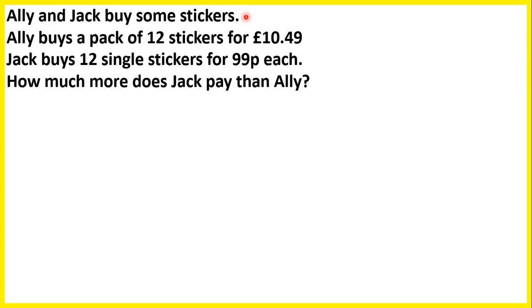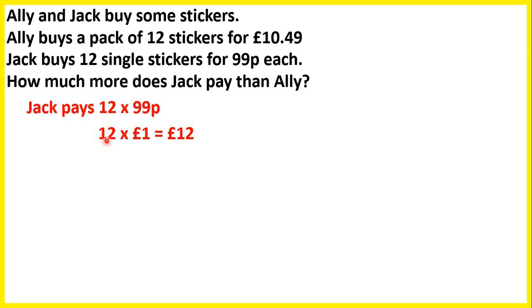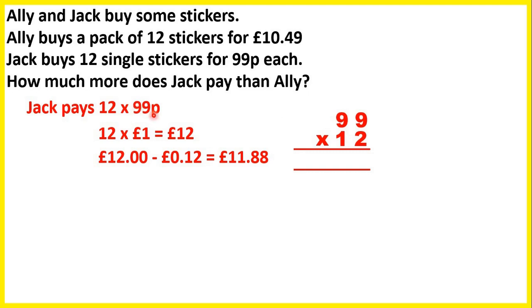Ali and Jack buy some stickers. Ali buys a pack of 12 stickers for £10.49. Jack buys 12 single stickers for £0.99 each. How much more does Jack pay than Ali? We need to work out how much Jack pays: 12 times £0.99. I would work out that 12 times £1 is £12, and £0.99 is just 1 pence less than £1. So for 12 stickers, that will be 12 pence less than £12, so that's £11.88.